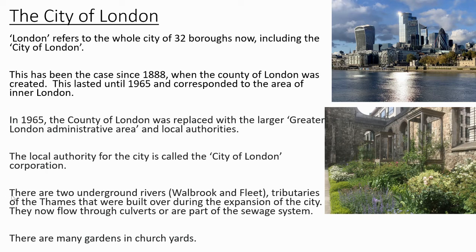The local authority for the city is called the City of London Corporation. There are also two underground rivers, the Walbrook and the Fleet, which are tributaries of the Thames. They were built over during the expansion of the city and now flow through culverts or are part of the sewage system. There are also many gardens in churchyards — a lot of the churches were bombed in World War II, a number have been rebuilt, and most of the churchyards are really beautiful gardens now.